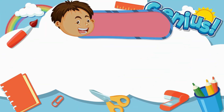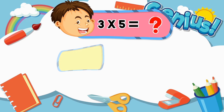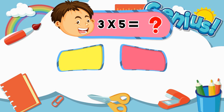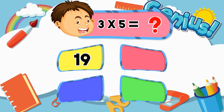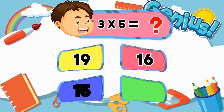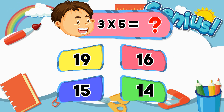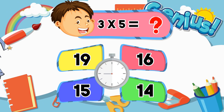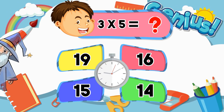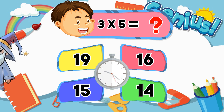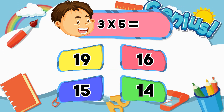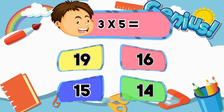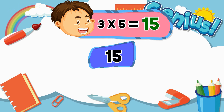What is 3 times 5? 19, 16, 14. Answer: 15.